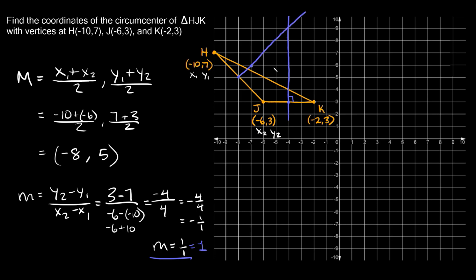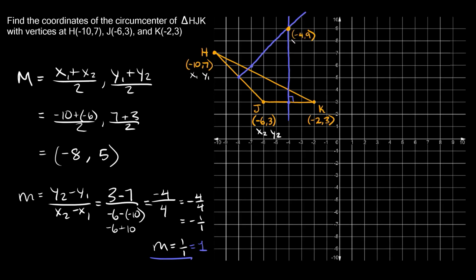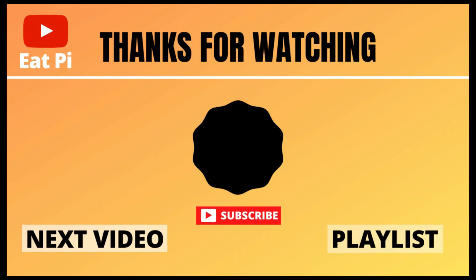Now that we found our two perpendicular bisectors, where those two lines intersect is where the circumcenter is. The two lines intersect right here — and this point looks like it's at (−4, 9). So the circumcenter is at (−4, 9). You can see that this point is the same distance away from all of the corners — all the vertices. If you found the video helpful, definitely leave a thumbs up below, and if you have any other questions or want to see other examples, just let me know in the comments.